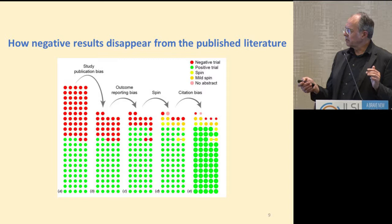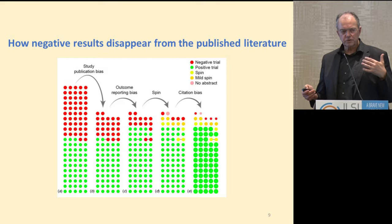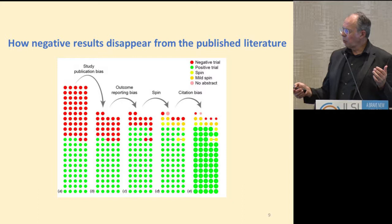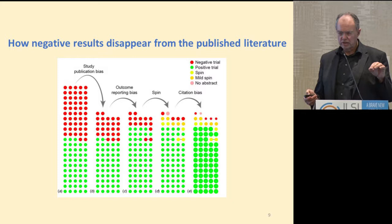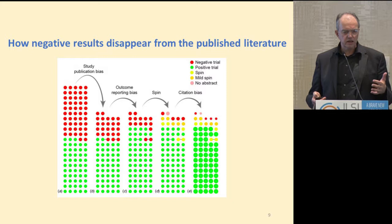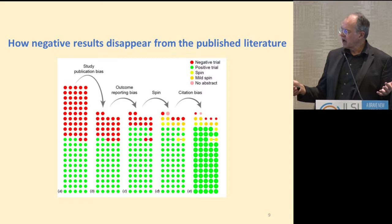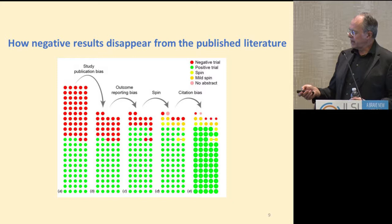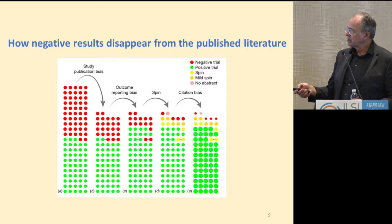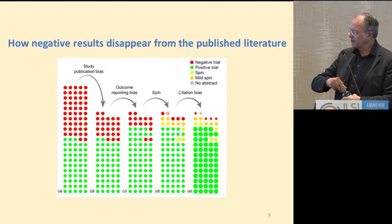One example of negative results disappearing from the literature: drug trials are the only instance I know with a gold standard. At the FDA level, 105 drug trials of antidepressant drugs were reviewed — the FDA looked at the raw data and decided whether each was a positive or negative study. Half of the 105 were positive, the other half negative. A few years later, of the negative studies only half were published, while with one exception all the positive studies were published. That is publication bias — also called cherry-picking or outcome reporting bias.